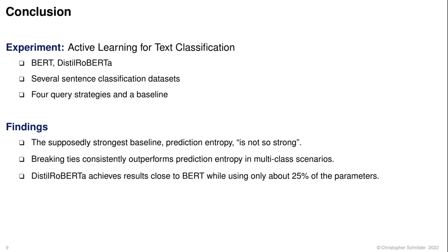To summarize, we systematically evaluated BERT and DistilRoBERTa combined with several uncertainty-based query strategies on active learning for text classification. We find that the supposedly strongest baseline, prediction entropy, is not so strong as expected. Breaking ties, on the other hand, consistently outperforms prediction entropy in multi-class scenarios. Finally, DistilRoBERTa achieves results close to BERT while using only 25% of the parameters.